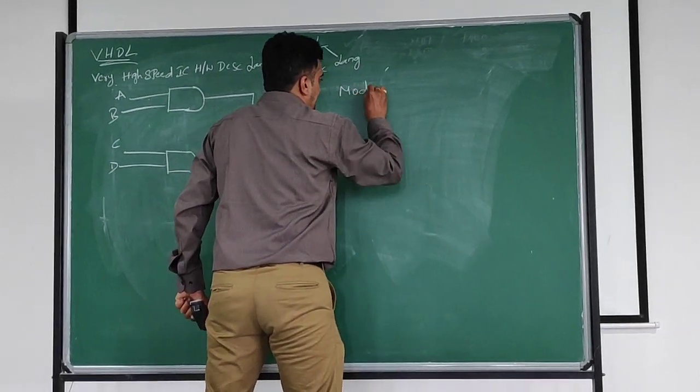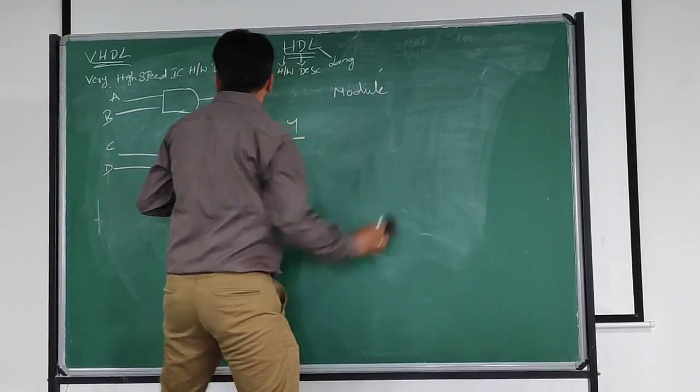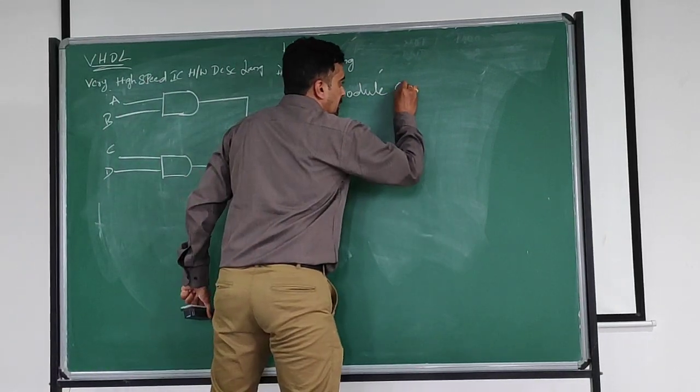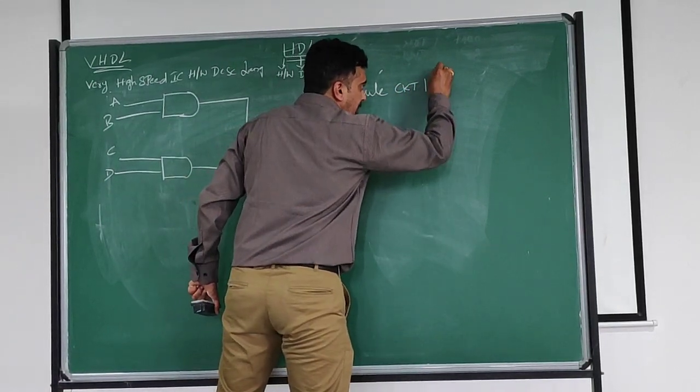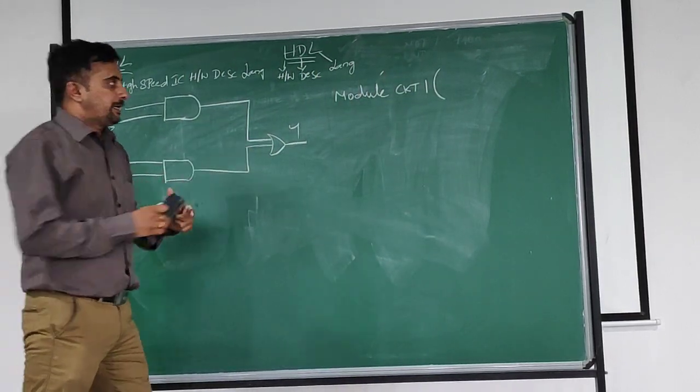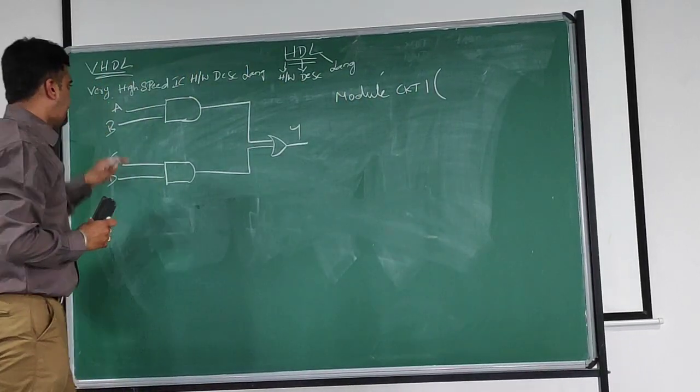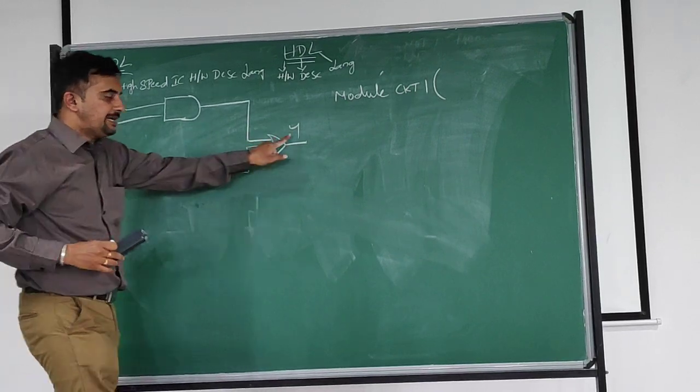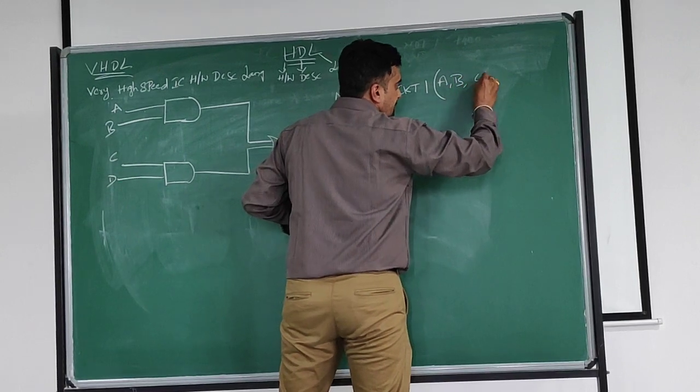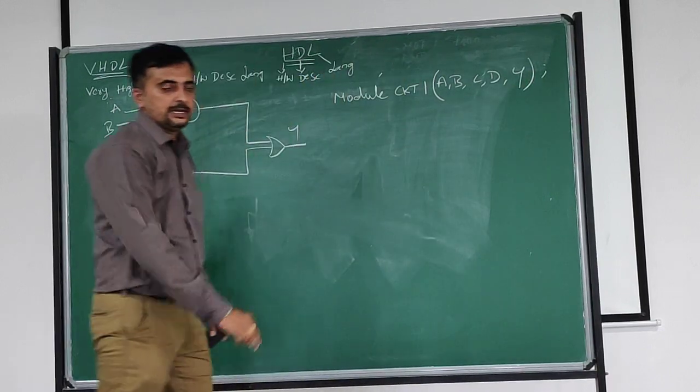First, module. Write module as it is. Open brackets - sorry, before that module. This is, I will use this circuit as a name circuit 1. Module circuit 1, open brace. Parameter view. In this, in general structure we discussed about - we have to write parameter view, which are all the parameters. We have to - A, B, C, D, and Y. Totally five parameters. A, B, C, D, Y. Semicolon.